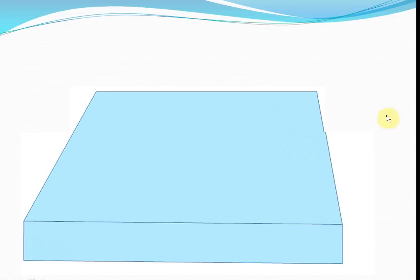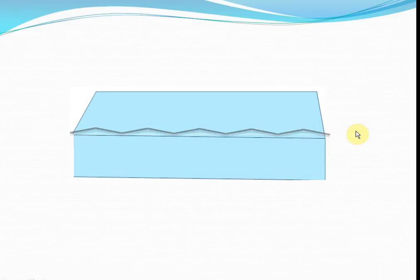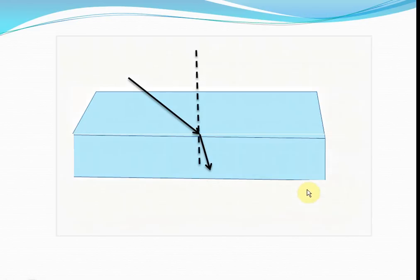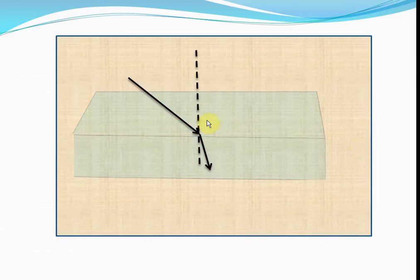Let's consider this glass slab. When a light ray strikes this glass slab, it gets refracted like this. The first law of refraction states that the incident ray, the refracted ray, and the normal at the point of contact all lie in the same plane. This is very important.